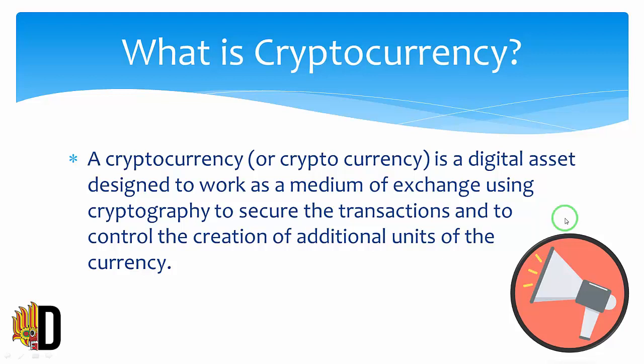You can use crypto to buy regular goods and services, although many people invest in cryptocurrencies as they would in other assets like stocks or precious metals. While cryptocurrency is a novel and exciting asset class, it can be risky as you must take on a fair amount of research to fully understand how each system works. Now we check what are the differences between conventional currencies and digital currencies.